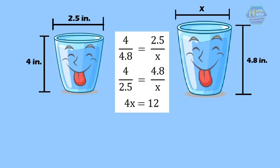The equation will become 4x equal to 12. To find the value of x, let's divide both sides by 4, and the value of x is 3. Therefore, the width of the second glass is 3 inches. That's the concept of proportion.